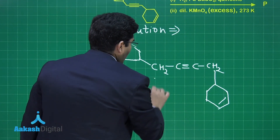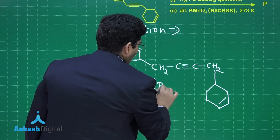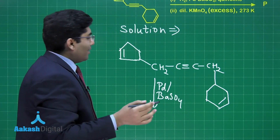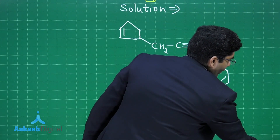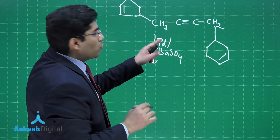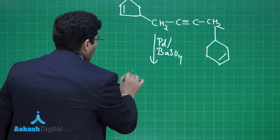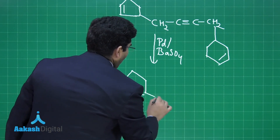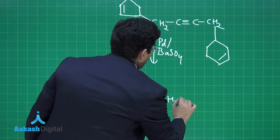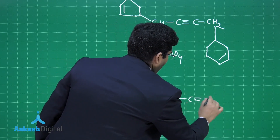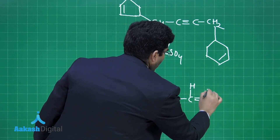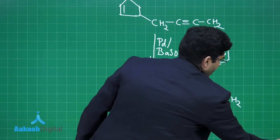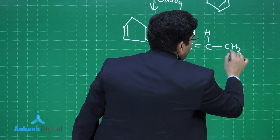On adding palladium BaSO₄ with quinoline — that is Lindlar's catalyst — we know that syn addition will take place and this alkyne will get reduced to alkene. Nothing will happen to the double bond of the cyclopentene, and we will get CH₂ here and C=C with hydrogen, hydrogen, and CH₂, and the ring of cyclohexene.